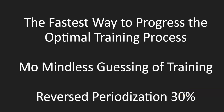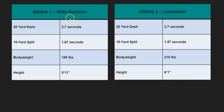I realized the reverse periodization model was better for them, but I still have to test to know for sure. For example, if you have a receiver and a linebacker — let's say they both ran a 2.7 in the 20 — but they had different times in the 10, they're different types of athletes. You can see they would be split into two different training programs.